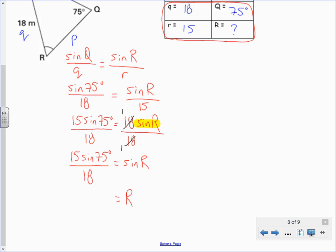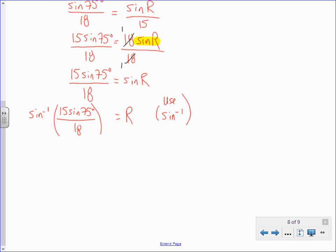So in this case, to solve for R, we need to use the inverse sine. Use that for finding the angle. So I'm going to write for good communication sine inverse of this ratio. And then I'm going to conduct my calculation.